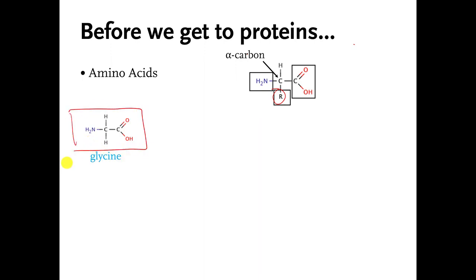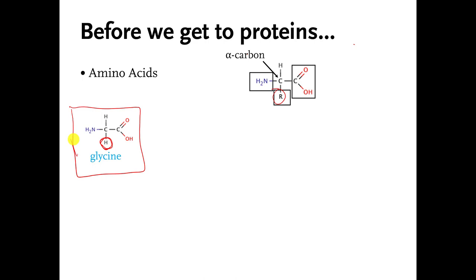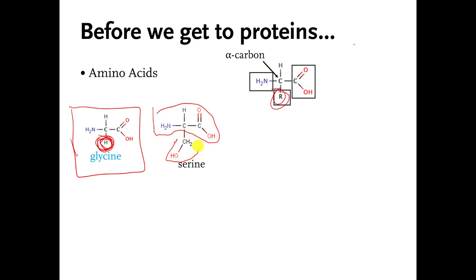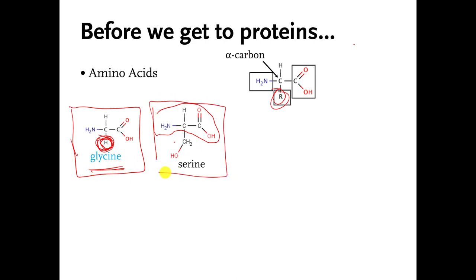What's taking the place of R here? It's the simplest replacement that you can have — it's a hydrogen atom, because that's the simplest atom that we have as well. This particular amino acid molecule has a name: it's called glycine. I don't expect you to memorize what glycine looks like. There's a different amino acid. These are the parts it has in common with all other amino acids, and this part here is what's taking the place of R — it's a little more complicated: a carbon atom with some hydrogens and an alcohol at the end. This amino acid is called serine.